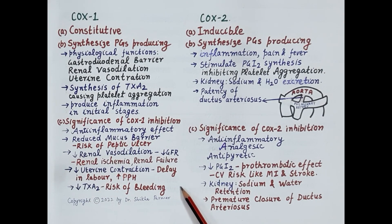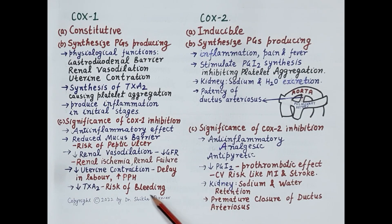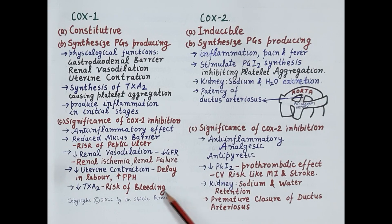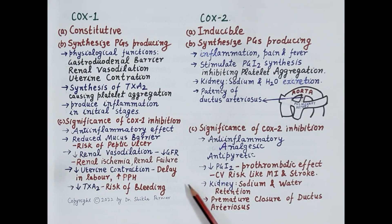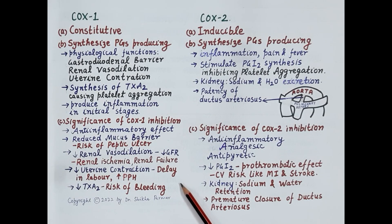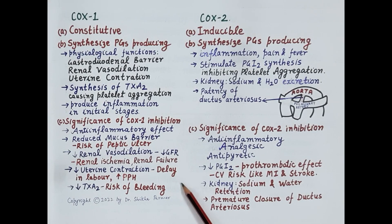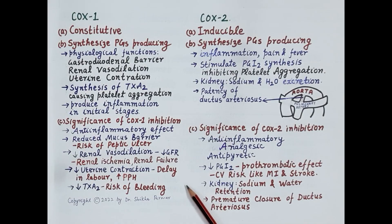So this is, in brief, the pharmacology of cyclooxygenase 1 and cyclooxygenase 2, which forms the basics of non-steroidal anti-inflammatory drugs. If you are aware of the differences between COX-1 and COX-2, it becomes very easy to understand NSAIDs. If you find the video useful, kindly like, subscribe, and share. Thanks for watching.